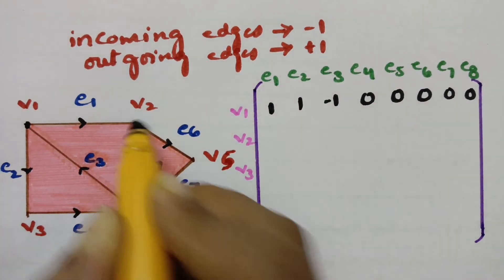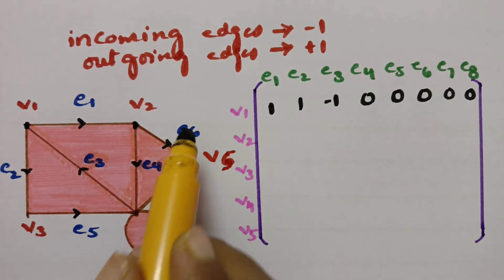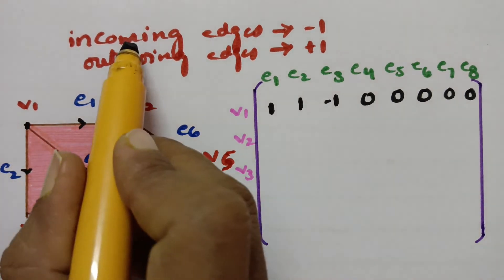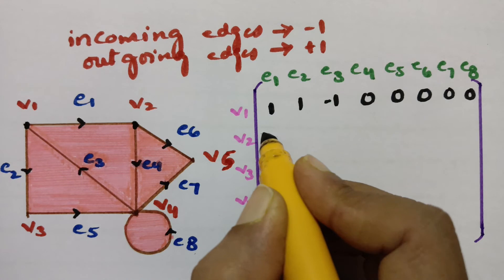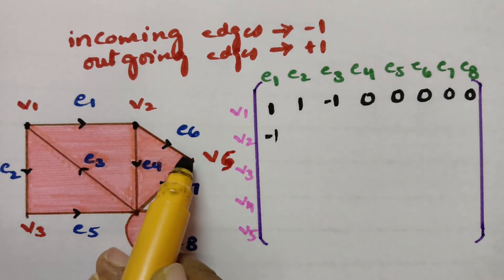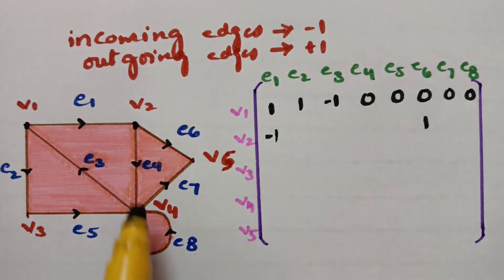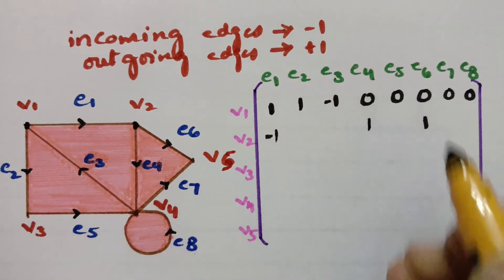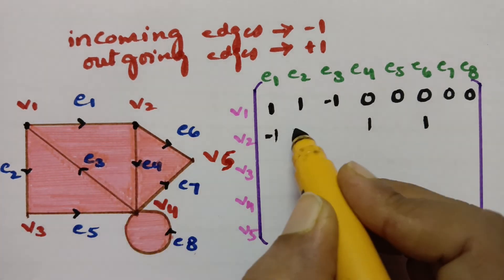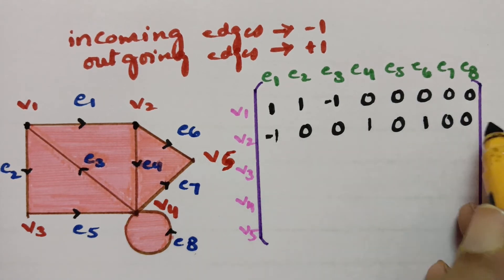Going with v2, it has three edges incident towards it: e6, e4, and e1. e1 is incoming to v2, so minus 1. e6 is outgoing, so plus 1. e4 is also outgoing, so plus 1. Only these three edges are incident to v2; remaining are all zeros.